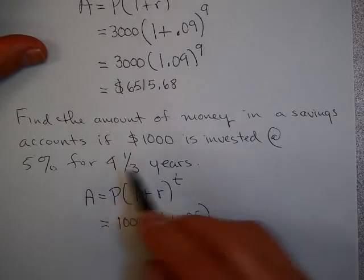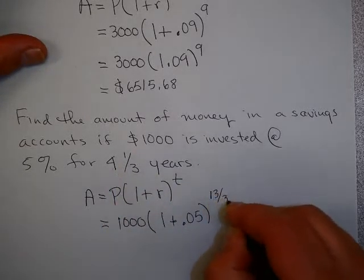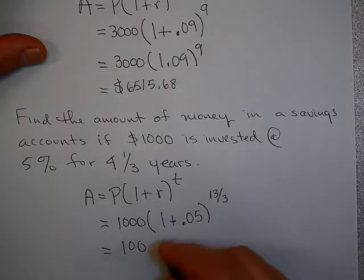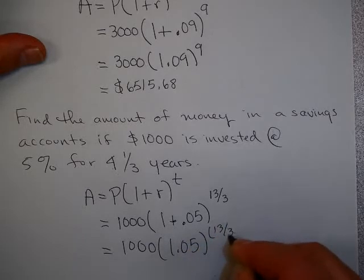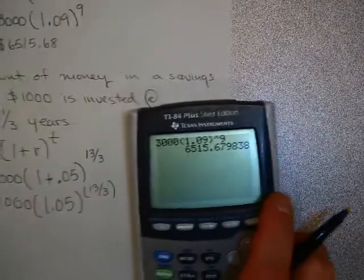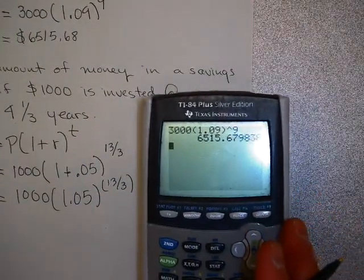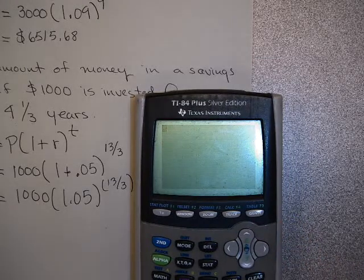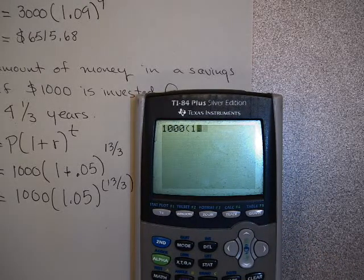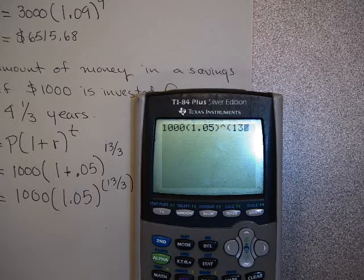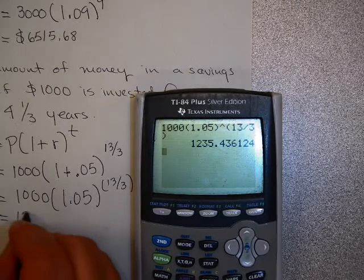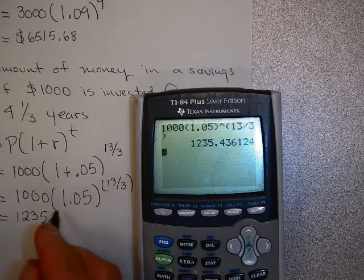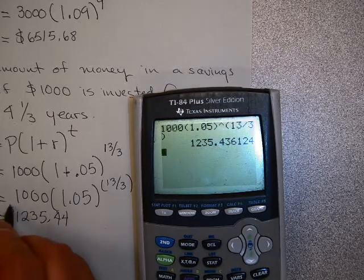4 and a third is very easy for me to write as an improper fraction of 13 thirds. Now I can simplify this a little to 1,000 times 1.05 to the 13 thirds. Now let's try putting this in our calculator. So I'm going to take 1,000 times 1.05 raised to 13 divided by 3. Make sure you put that 13 divided by 3 in parentheses. And that's going to give me $1,235.44, again rounding to the nearest cent.